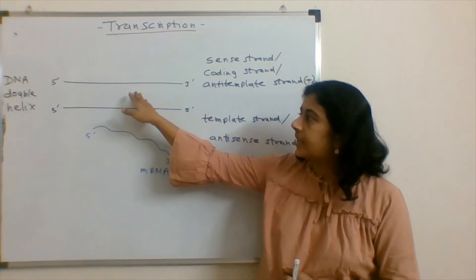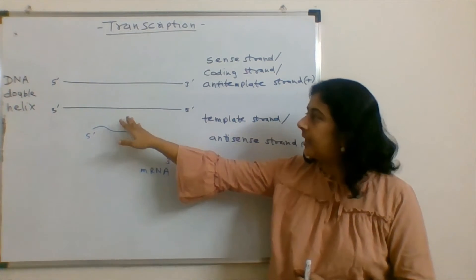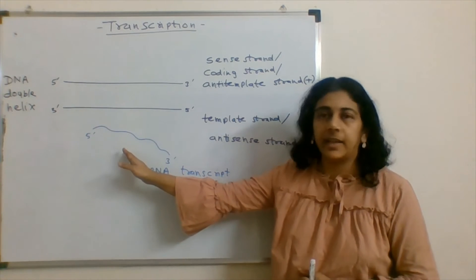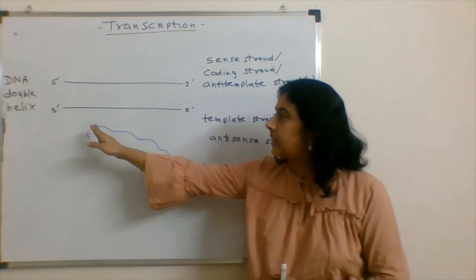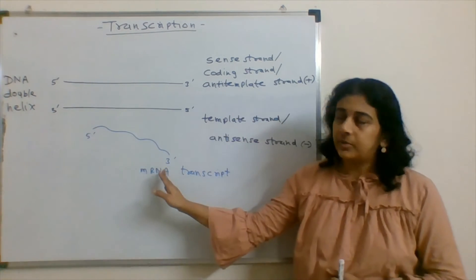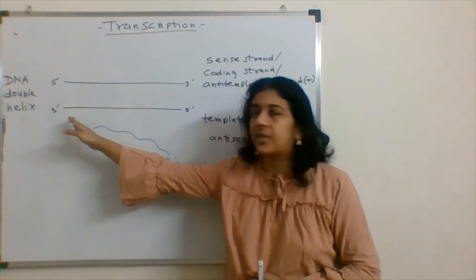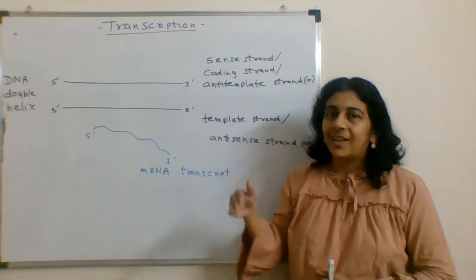So here, these are the double-stranded DNA and this lower strand is getting transcribed. So the direction is 5 prime to 3 prime and template strand is 3 prime to 5 prime.